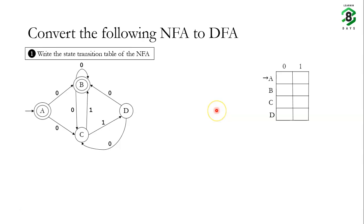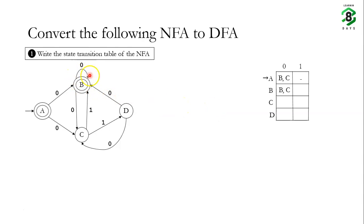On state A with input 0, the machine transitions to state B and state C — it could go to either B or C. On state A with input 1, there is no transition. On state B with input 0, it could transition to either state B or state C. On input 1 from B, there is no transition.